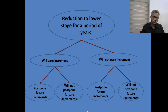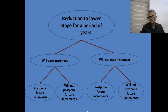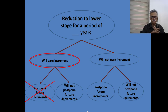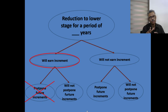Out of these four variations, which all appear possible, one variation is actually not practicable — it is not theoretically possible to impose. That is when the discipline authority says he will earn increment, it will then not be correct to also say it will postpone future increments of pay. So the variation on the extreme left — he will earn increment but it will postpone future increments of pay — is not implementable. We will see why as we go along.